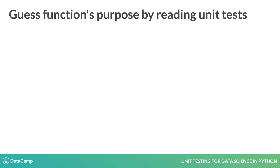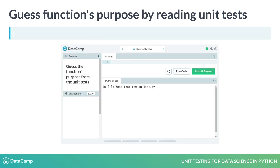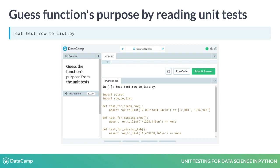To mimic this real-life situation, some exercises may ask you to guess a function's job by looking at a test module. In this case, just type exclamation cat followed by the test module name in the IPython console to see the unit tests.